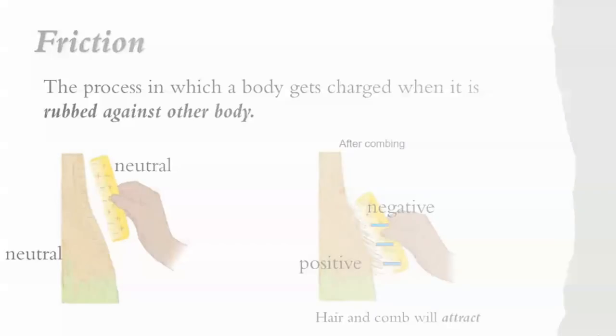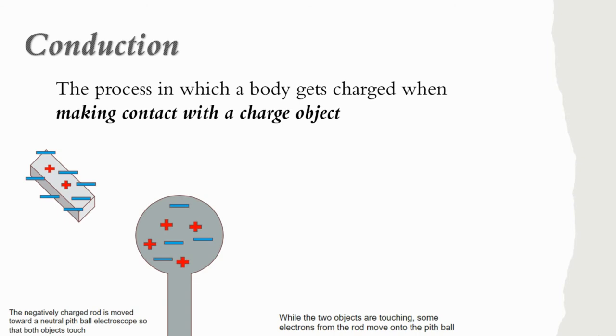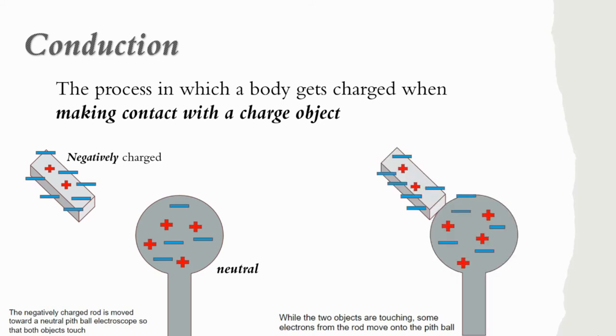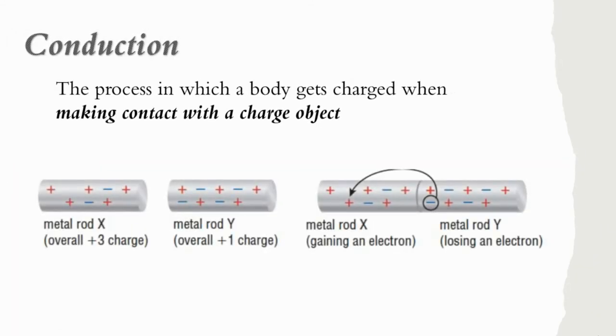Next is conduction. Conduction is the process in which a body gets charged when making contact with a charged object. If the charged object is negatively charged, electrons will move onto the neutral object. If the charged object is positively charged, electrons of the neutral object will move onto the positively charged object. In this sample, as negatively charged rod touch a neutral pithball electroscope, some electrons from the rod moved onto the pithball, and that makes the pithball negatively charged. If two charged objects touched, electrons will move away from the object with more electrons until both objects have the same charge.